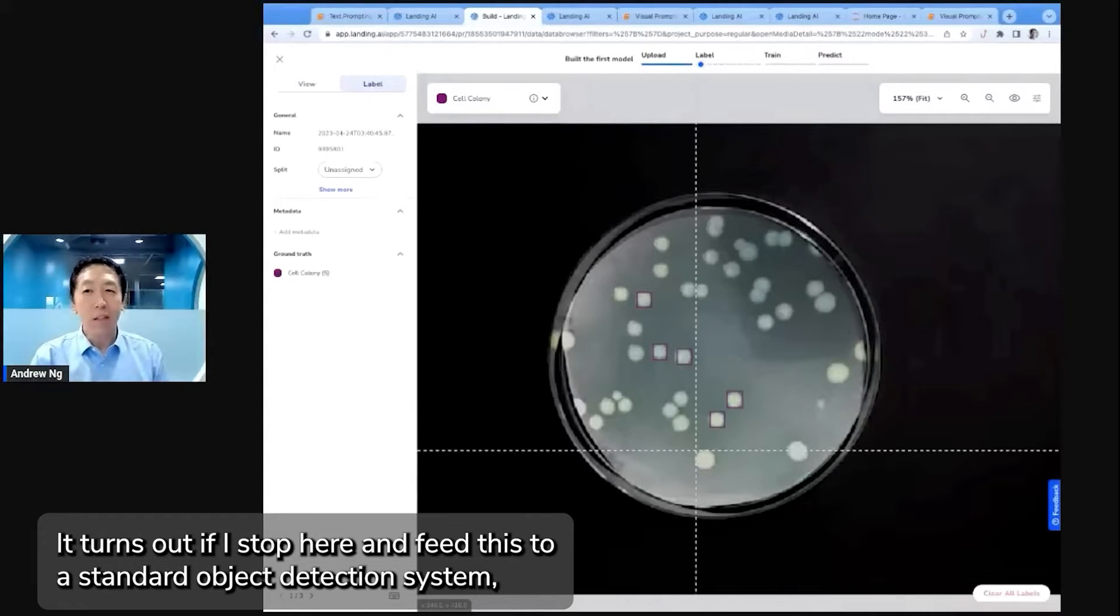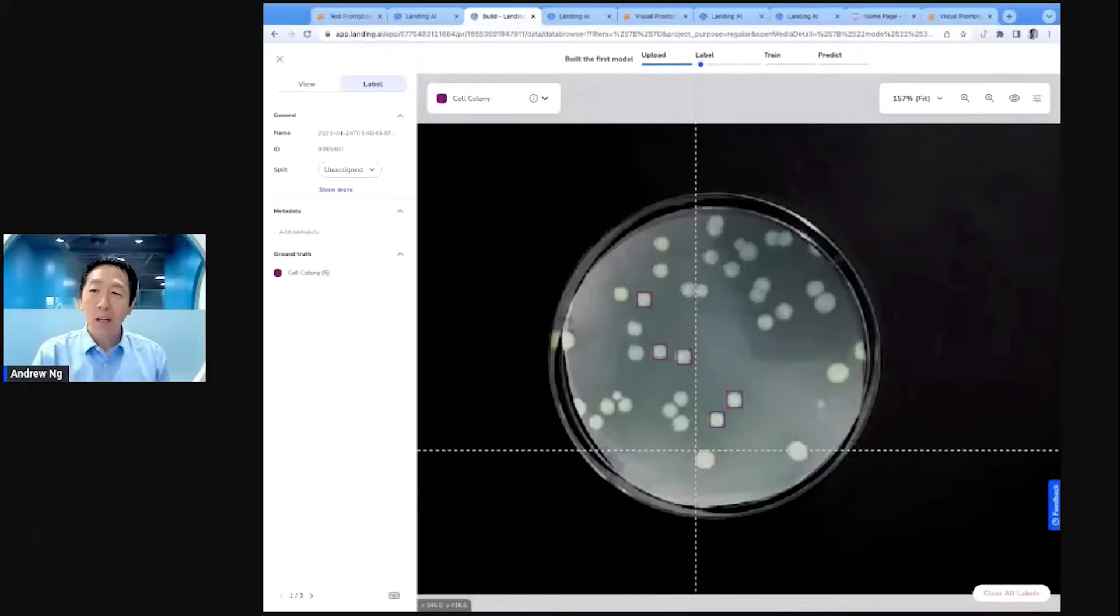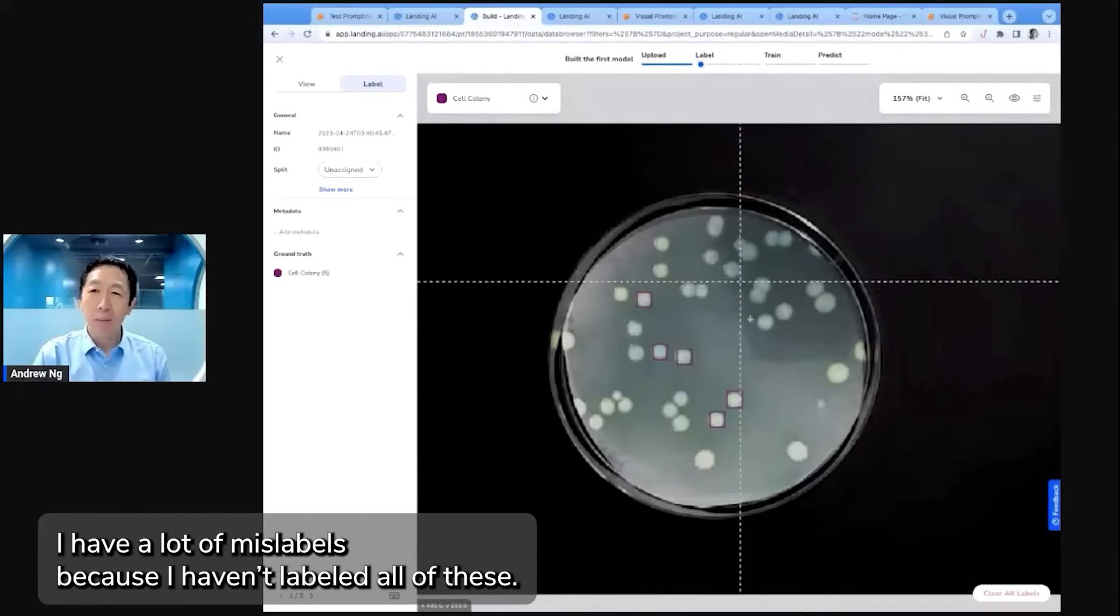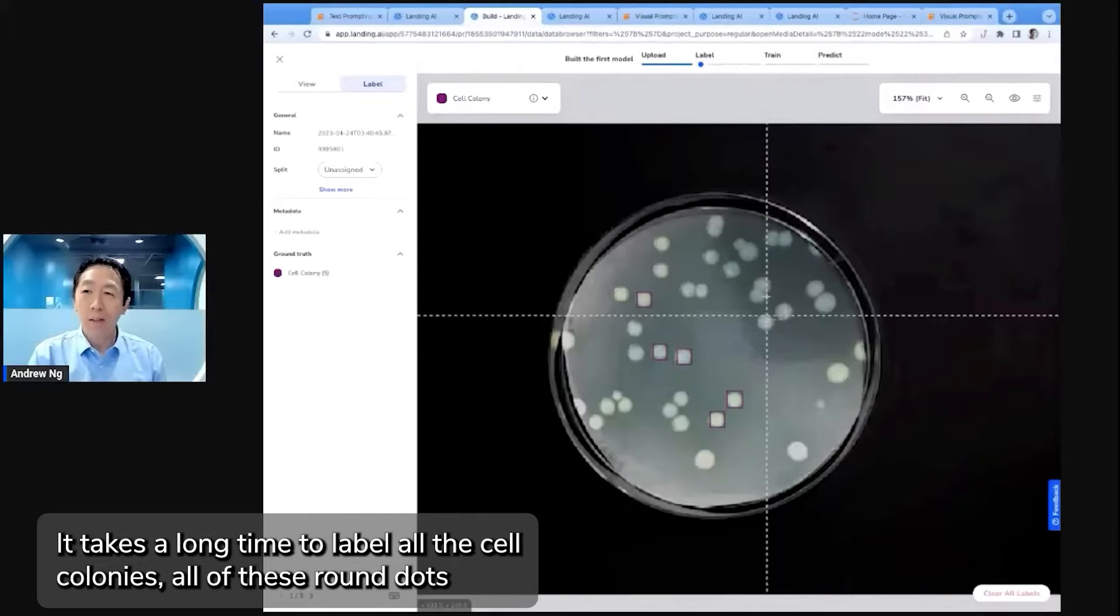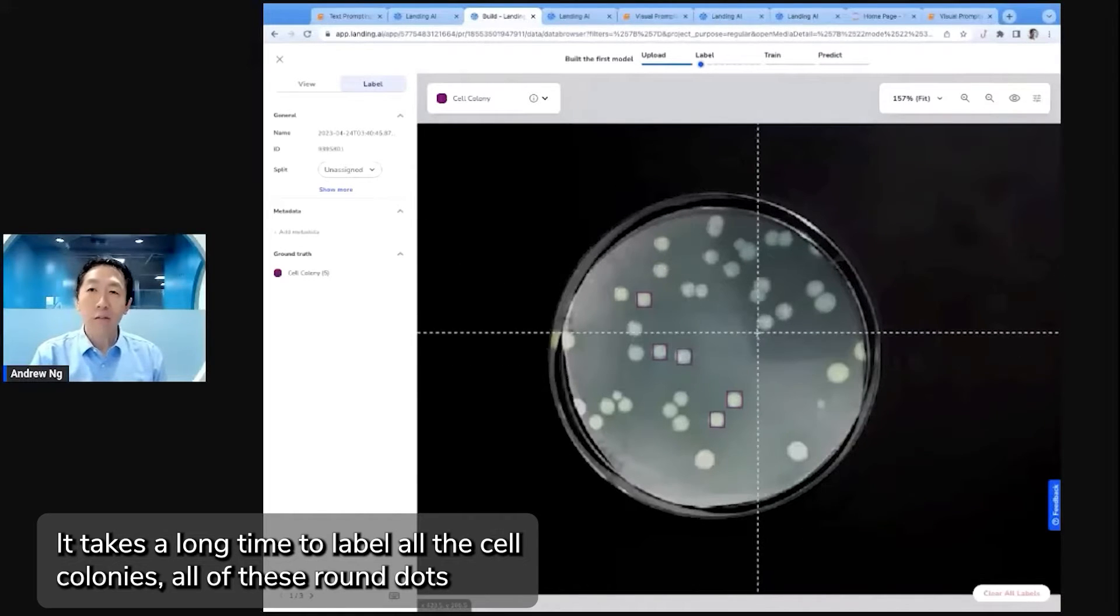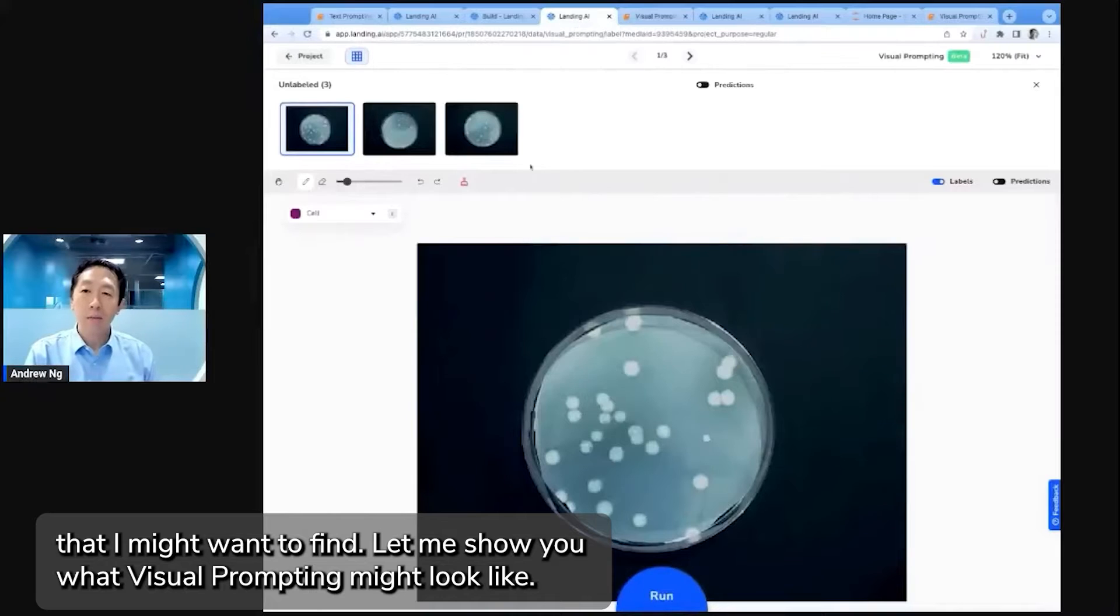It turns out if I stop here and feed this to a standard object detection system, I have a lot of mislabels because I haven't labeled all of these. So it's just really annoying. It takes a long time to label all the cell colonies, all of these round dots that I might want to find.